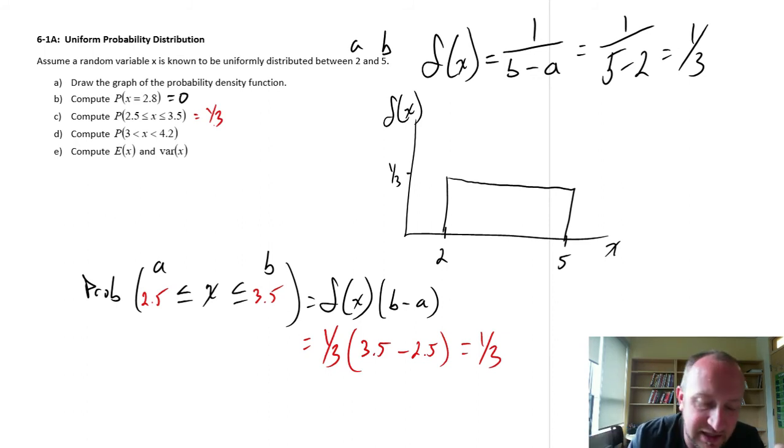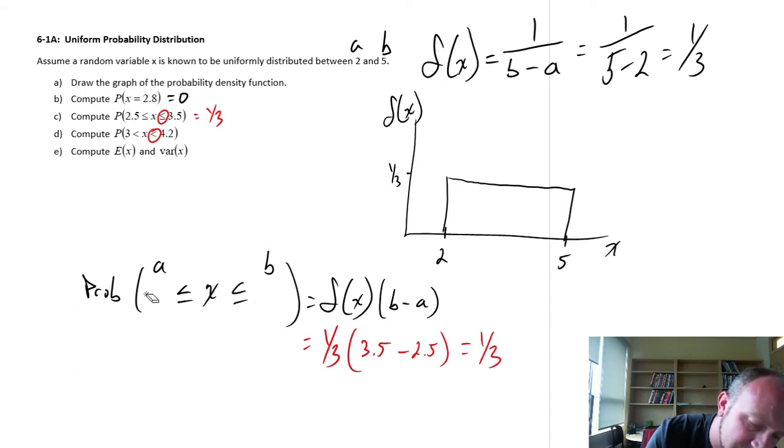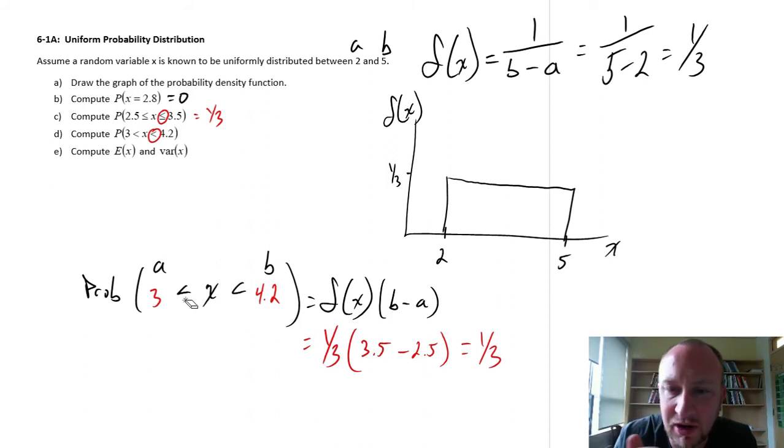The equality is in there as well. And in fact, notice this one we have the equality as part of it, and this one the equality is not included. It doesn't change the nature of that calculation whatsoever. Getting rid of those equality portions doesn't change this problem, because as we saw, the probability of it being perfectly equal to any one value is actually 0. So whether that equality is part of the problem or not, it doesn't change the nature of the calculations.